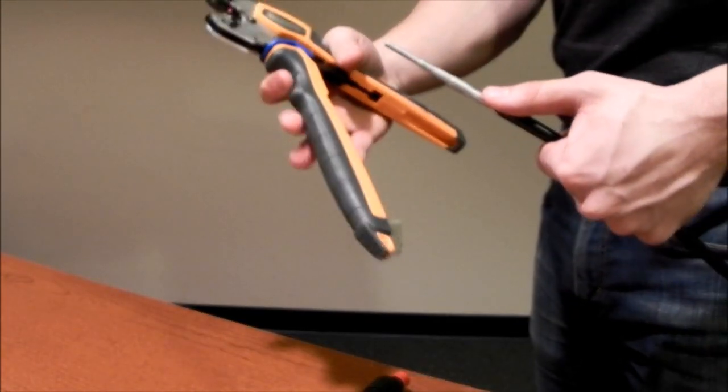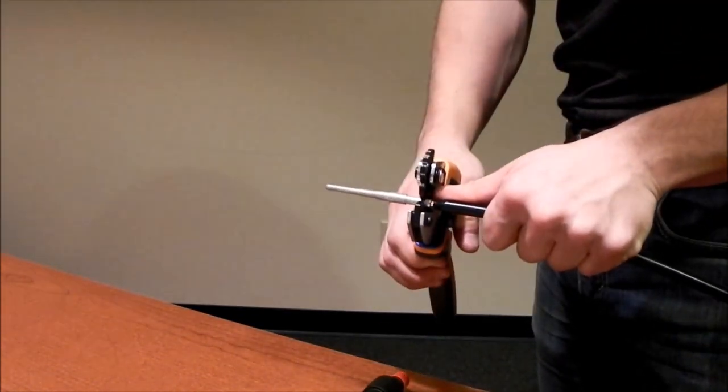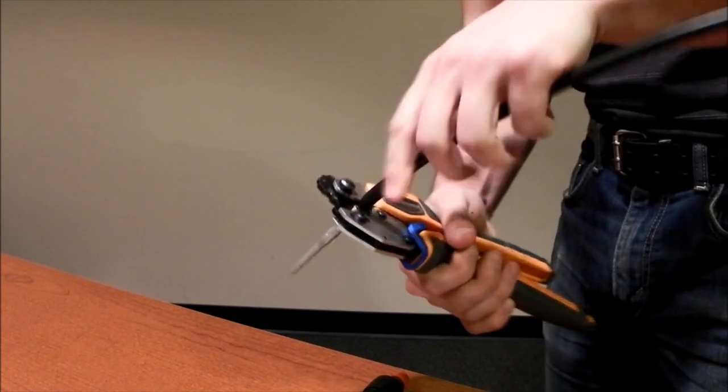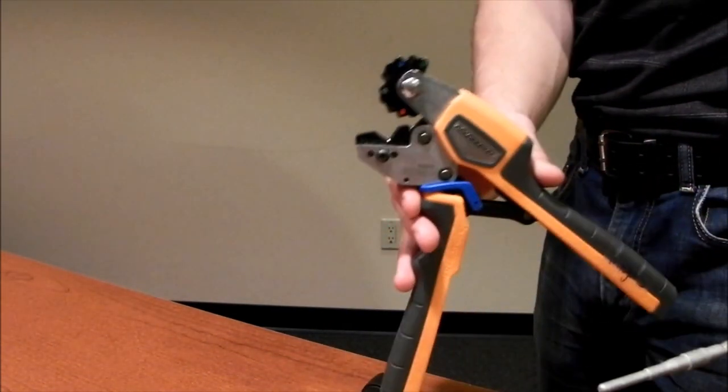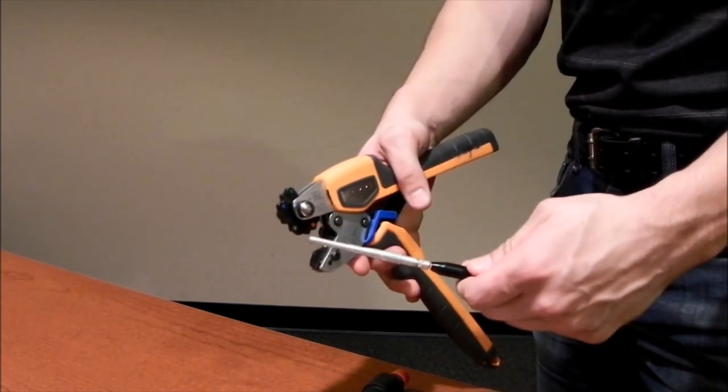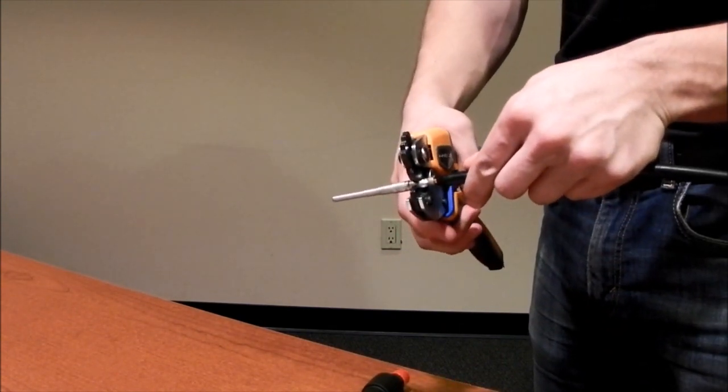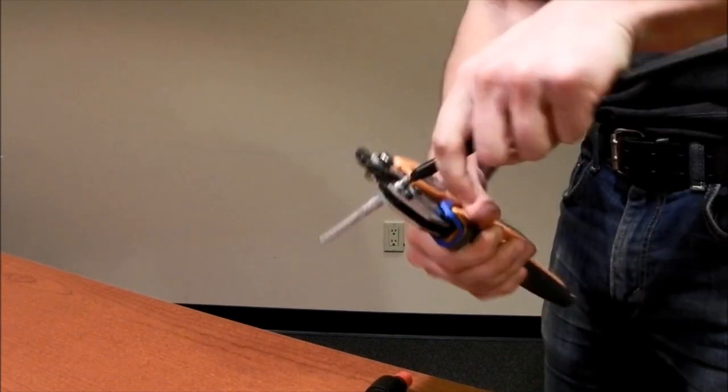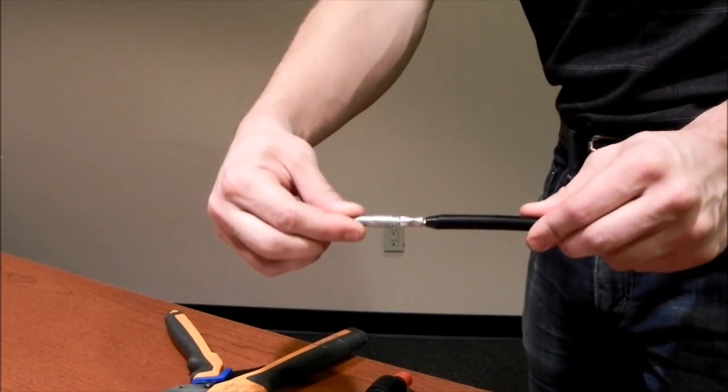Use your crimper to first crimp approximately a quarter of an inch from the end of the contact. We recommend the Thomas and Betts model number TBM45S for this purpose. Next, turn the wire 90 degrees and crimp about a quarter of an inch from the previous crimp. This gives a strong and secure connection.